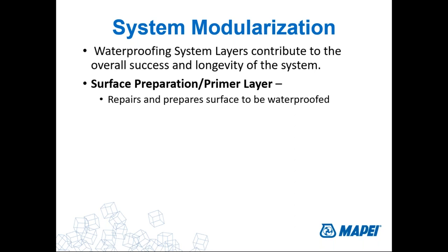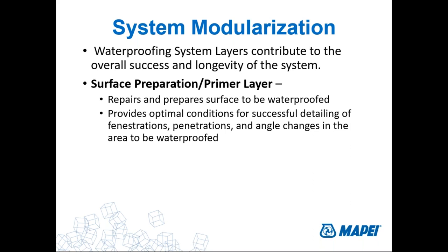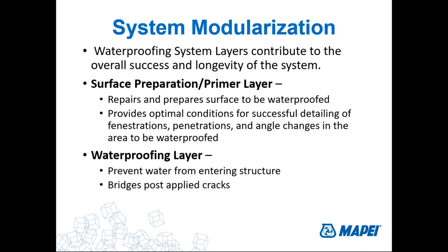We also deploy sealants, detailing membranes, and detailing strips of membrane to take care of penetrations, fenestrations, and angle changes — inside and outside corners, wall to footing, wall to slab, any angle changes in the waterproofing layer. If there's a thickened slab area on the blind side, we'll want to reinforce that area so we're continuous and complete. Once we're squared away, it's time to put the waterproofing in. We already know it prevents water and bridges post-applied cracks.